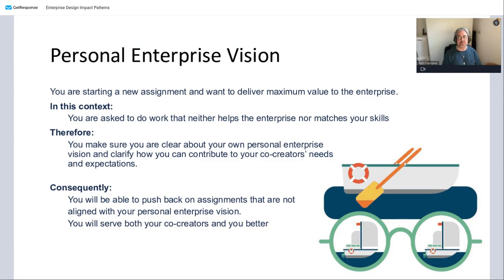The first pattern is called Personal Enterprise Vision, one I'm quite fond of because we often forget to do this. The situation is that you are starting a new assignment and want to deliver maximum value to the enterprise. People say 'I'm sure you can do this' and you say yes — but have you actually thought it through? Many times you are asked to do work that may not be an exact match to what is needed or what you can provide.